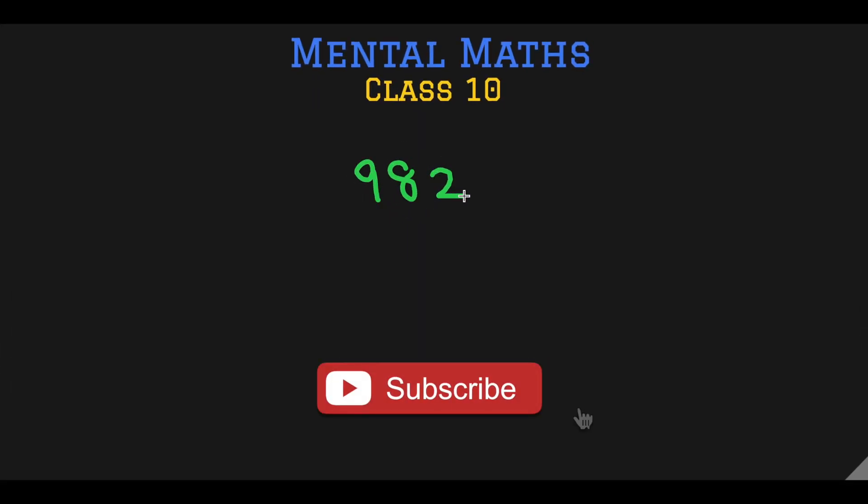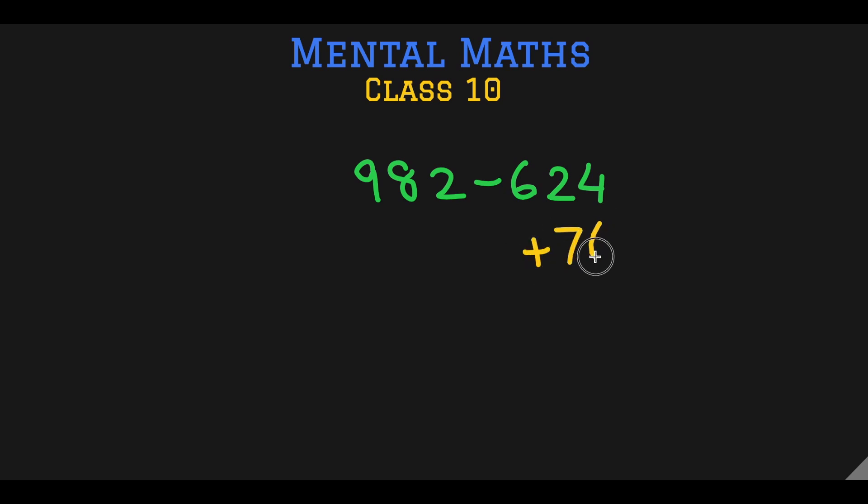982 minus 624. Now I need to round up 624 to make it 700. What do I add to it to make it 700? I add 76 to it. So I have to remember this 76 in my brain. And I need to subtract 982 minus this 700 to get 282.